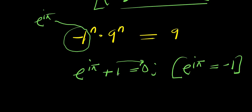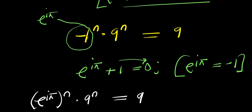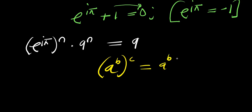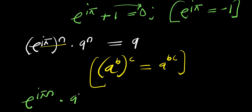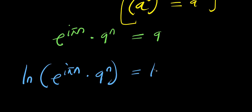So let's replace it right now. We are going to have e to the power i times pi, raised to the power n, times 9 to the power n equals 9. From the identity a to the power b, a to the power c equals a to the power b times c, we multiply the exponents out. At this point I can make use of natural log: natural log of e to the power i times pi times n, times natural log of 9, equals natural log of 9.